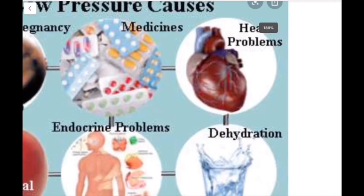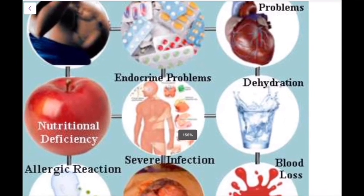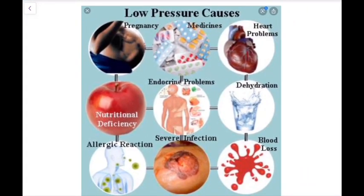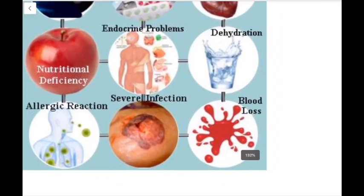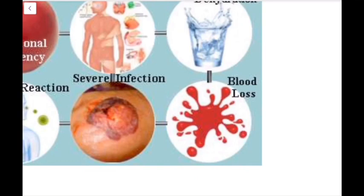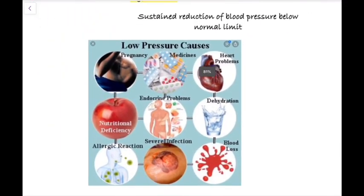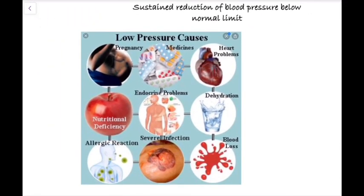With hypotension, organ perfusion is reduced — the blood supply, oxygen, and glucose supply to organs decreases. In situations like shock, this can cause multiple organ failures. This concludes the overview of blood pressure; hope you will read more and learn more about blood pressure. Thank you.